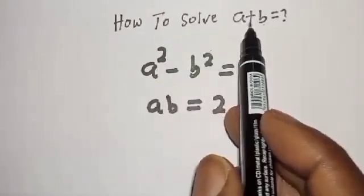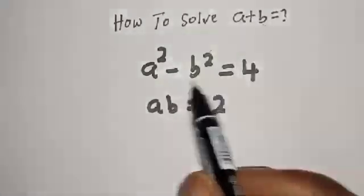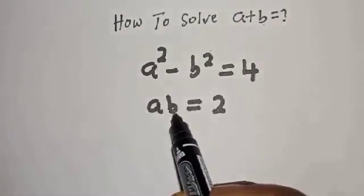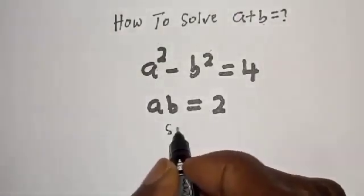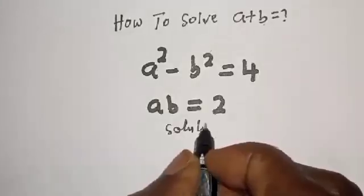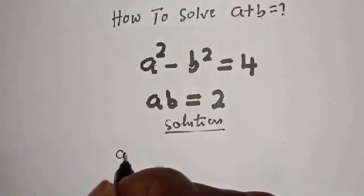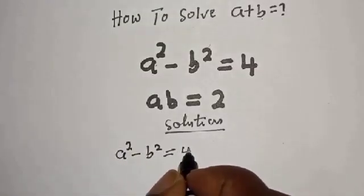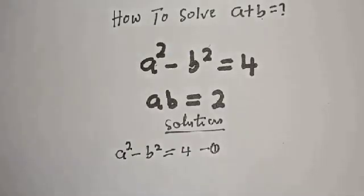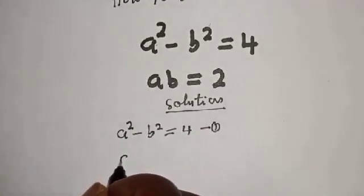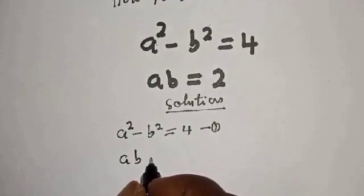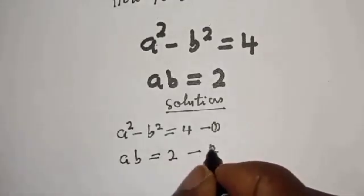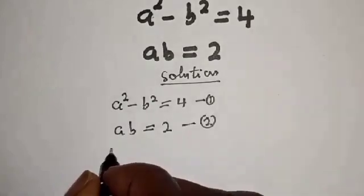How to solve for a plus b in this equation: a squared minus b squared is equal to 4, and ab is equal to 2. Let's call a squared minus b squared equals 4 equation 1, and ab equals 2 equation 2.